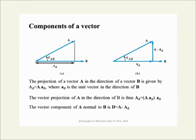One important thing we discuss in this lecture is the way we decompose a vector into two components: one in the direction of another vector and one normal to that other vector. As you can see in this figure, we have a vector A which is being projected onto another vector B. We write A_B as a scalar to indicate the length, and as a vector — A subscript B — to indicate the complete vector. A subscript B is a vector in the direction of B, whose length is A subscript B as a scalar.